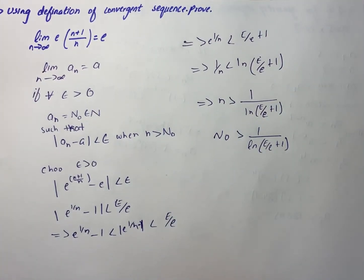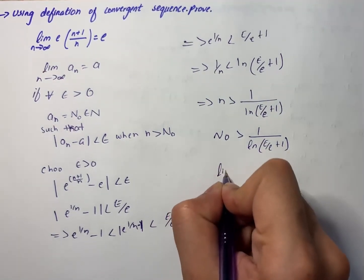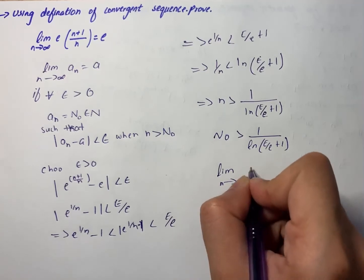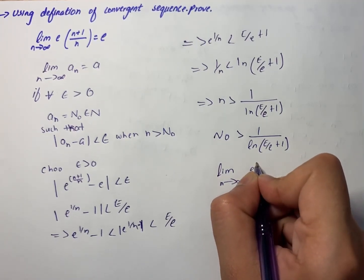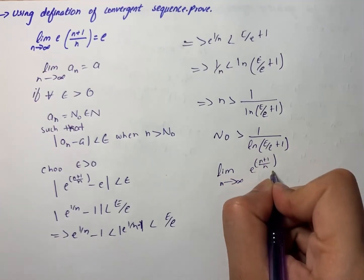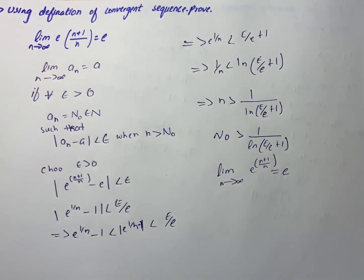For epsilon greater than 0, there exists n such that we have our answer: limit n approaching infinity of e^((n+1)/n) equals e. So here we have our proof.